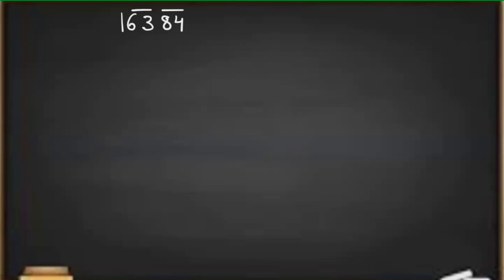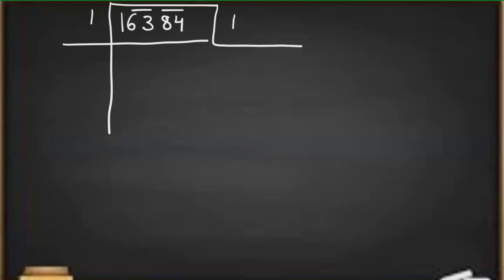In the long division method, first we make pairs of digits from right to left. Taking the same number 16,384 — the first pair is 84, the second pair is 63, and 1 is left alone. We divide 1 by 1; we write 1 in the answer and 1 below, subtract to get 0, then bring down the whole next pair 63 together — unlike regular division where we bring one digit at a time.